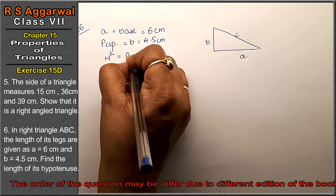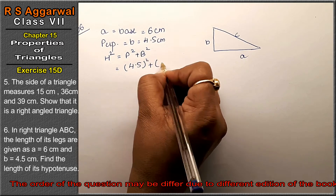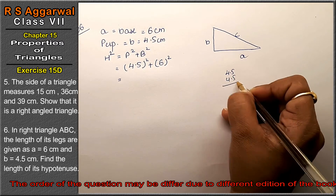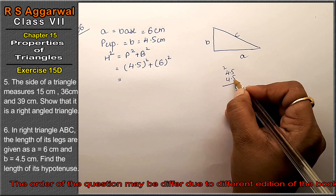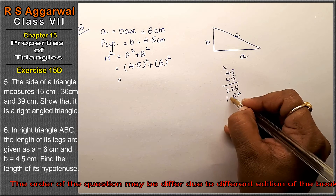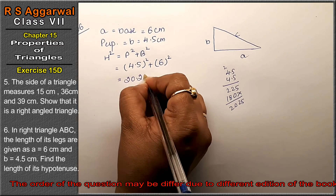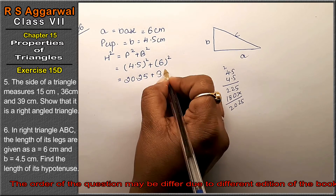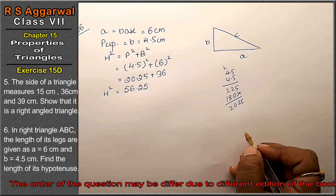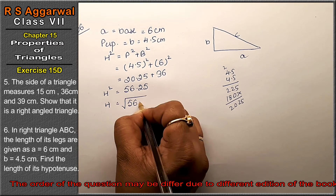We will apply the Pythagorean theorem: H square equals P square plus B square. So P is 4.5 cm squared and base is 6 squared. 4.5 into 4.5 gives 20.25, and 6 into 6 gives 36. So H square equals 20.25 plus 36, which equals 56.25. Now H equals square root of 56.25.